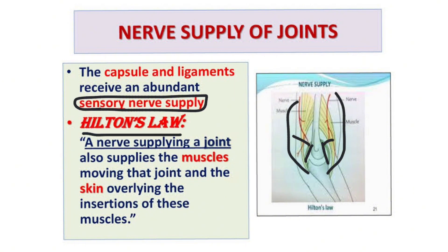There is an important law called Hilton's Law: a nerve supplying a joint also supplies the muscles moving that joint and the skin overlying the insertion of those muscles. That's Hilton's Law, one of the most famous laws in anatomy and in medicine in general.